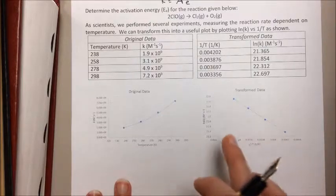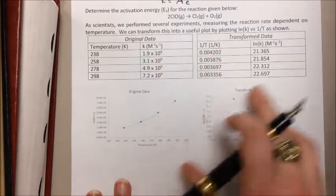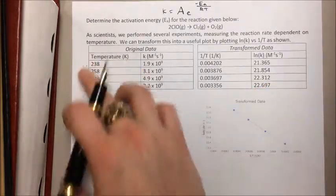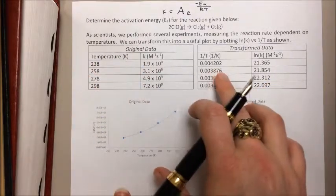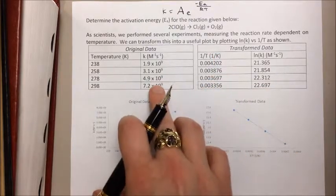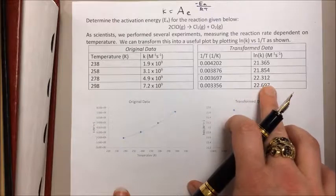What we need to do instead is plot 1 over T versus the natural log of K. So all I did here was take the temperature values, put them 1 over that temperature value, that's this column here, and I transformed the K to its natural log value.